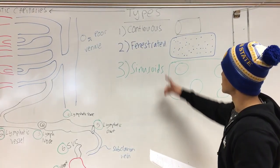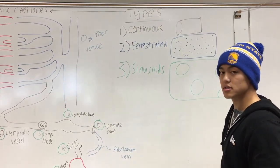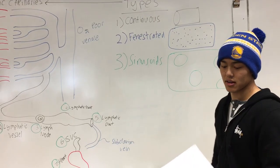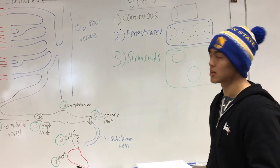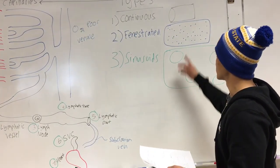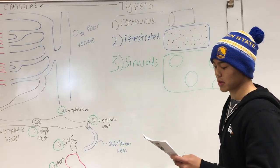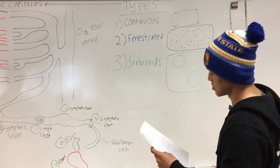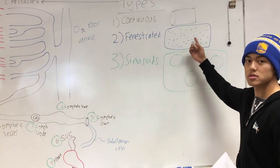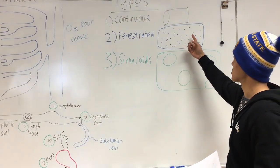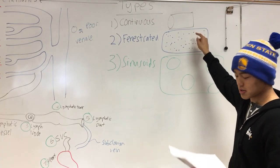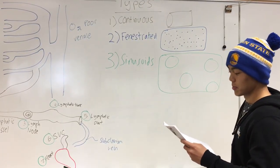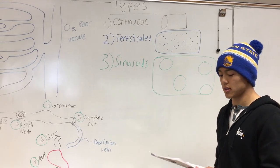Next is the fenestrated capillary. Fenestrated kind of means penetrated. This is for medium-sized molecules. The structure is tube-like with very small holes — I like to describe them as toothpick holes — and it's for mid-sized molecules such as those in blood.